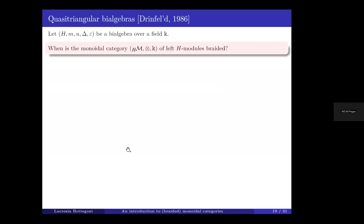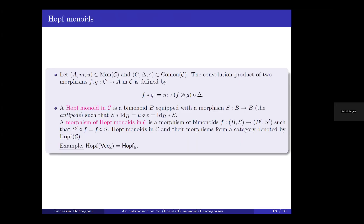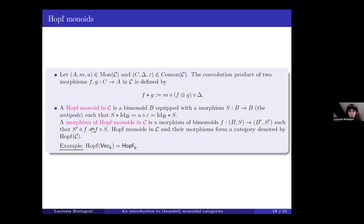[Question: For a bialgebra morphism between Hopf algebras it's automatic that it intertwines the antipodes. Is the same true for Hopf monoids, or only in the category of vector spaces?] You have to require this condition as part of the definition — it is not automatic.